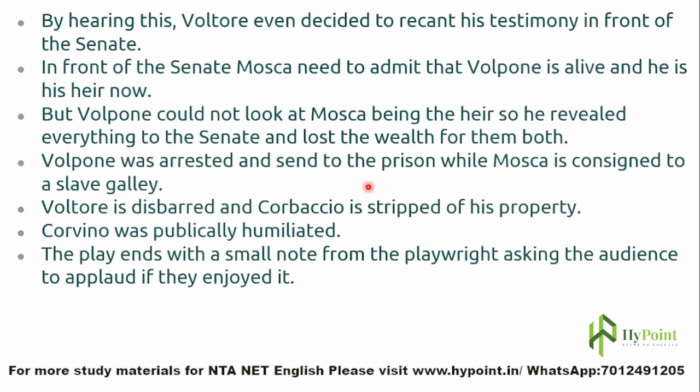Volpone is arrested and imprisoned. Mosca is consigned to a slave's galley. Voltore, having used his legal knowledge for dishonest purposes, is debarred. Corbaccio is stripped of his property, which is given to his rightful son Bonario. Corvino, who consented to prostitute his wife, is publicly humiliated. Every culprit and legacy hunter receives their share of punishment, and the play ends with a small note from the playwright asking the audience to applaud if they liked it.